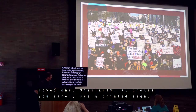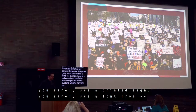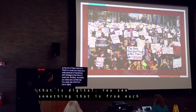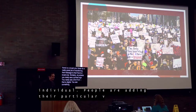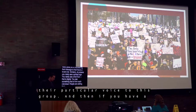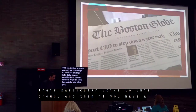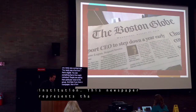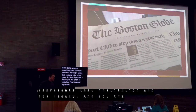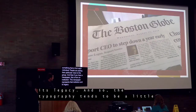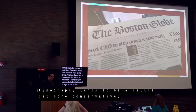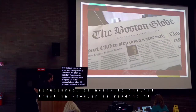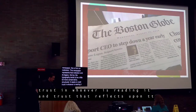Similarly, at a protest, you rarely see a printed sign — you rarely see a font that is digital. You see something that is from each individual; people are adding their particular voice to this group. And then if you have a newspaper, this is from an institution. This newspaper represents that institution and its legacy, and so the typography tends to be a little bit more conservative and structured. It needs to instill trust in whoever is reading it, and trust that reflects upon that institution.